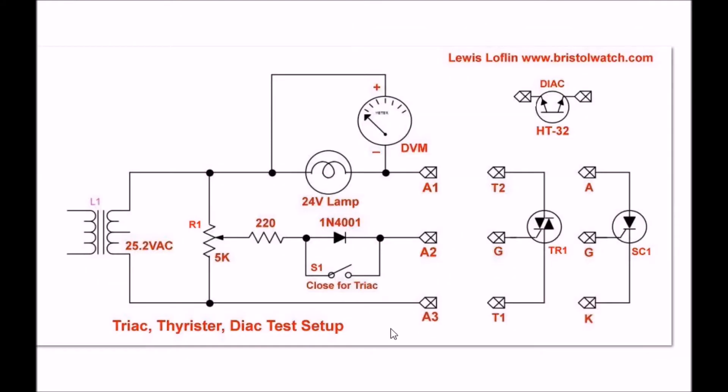This is the schematic to the main control board. It has an input transformer. While this says it's 25 volts, my particular one measures 28. R1 is a 5k potentiometer that controls the gate current to either a triac or an SCR. The load is a 24 volt lamp, and across the lamp is my red digital voltmeter you saw earlier.